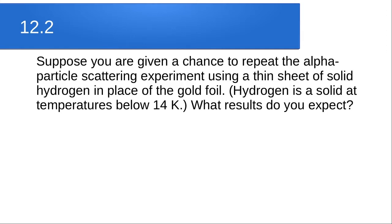To answer this, recall that Rutherford's experiment used a thin sheet of gold foil, and gold has an extremely heavy nucleus relative to the alpha particle that was shot at it. The alpha particle is the nucleus of a helium atom with two protons and two neutrons. But now we are replacing the gold foil with a thin sheet of solid hydrogen.